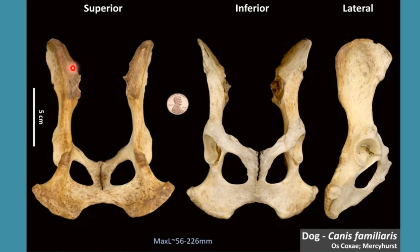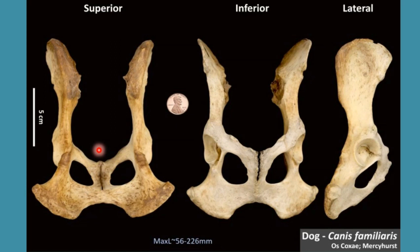The medial surface of ilium is nearly flat and it contains an auricular surface at its middle region. This auricular surface actually forms an articulation between the sacrum and ilium bone. At the dorsal aspect of Os Coxae of dog there is the sacrum bone, which is the fused sacral vertebrae of dog. So at this auricular surface, which is a rough surface at the middle aspect of ilium bone, it forms articulation with the sacrum vertebra of dog.